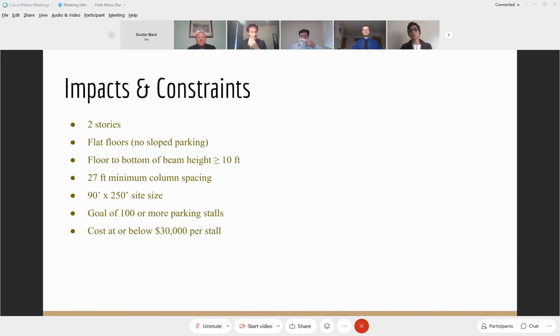Impacts and constraints: we are required to design two stories of parking garage with flat floor and the height of floor to the bottom of the beam should be greater than or equal to 10 feet. Minimum column spacing 27 feet. The size of site we are given is 90 by 250 feet. Our goal is to design 100 or more parking stalls. The cost should be at or below $30,000 per stall, and these constraints allow for adaptive reuse of the building.